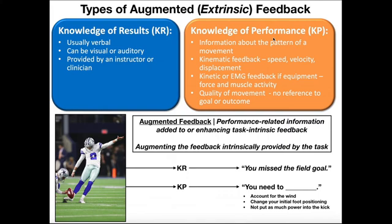Knowledge of performance doesn't have to do with the end result — it has to do with everything between the start and the end. So it's information about the pattern of a movement. We could be talking about kinematic feedback: the speed, velocity, or displacement. Or kinetic information about the force or power, or sometimes just the quality of the movement. If you're performing an Olympic lift, sometimes your form just wasn't good and that's why you don't get the lift, and someone could critique the form to help you for next time.